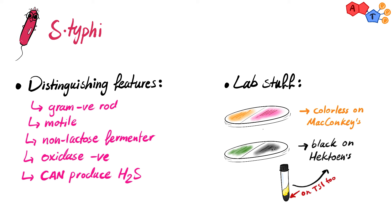Remember that Shigella does not produce hydrogen sulfide, and so Shigella species grow in green colonies on Hektoen's agar.